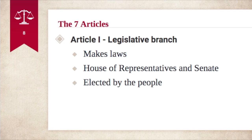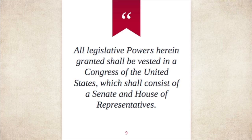After the preamble are the original seven articles of the Constitution. Article one established the legislative branch, which is in charge of making the laws. The legislative branch consists of Congress — the House of Representatives and the Senate — and the representatives and senators are elected by the people through voting. A quote from Article One reads: "All legislative powers herein granted shall be vested in a Congress of the United States, which shall consist of the Senate and House of Representatives."